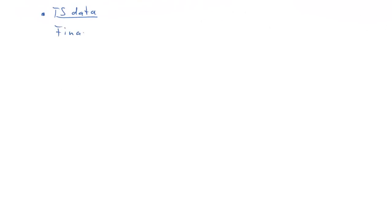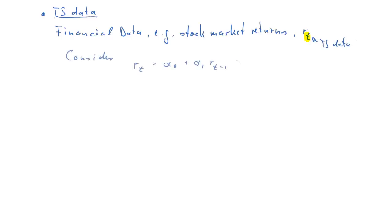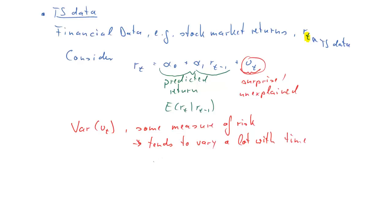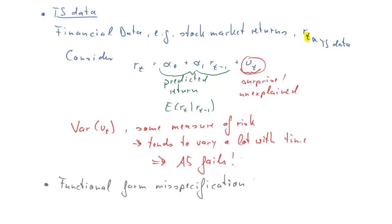When dealing with time-series data, there is also a case where we quite typically observe heteroscedasticity. For instance, looking at stock market returns R_t — now with T subscripts indicating time-series data — consider an AR(1) model. For financial data, the predicted return contains very little variation; most of the variation is in the u's, which are the surprises or unpredicted returns. The variance of that error term is a measure of risk of your investment, and this variance tends to vary through time a lot — also a breach of assumption A5, which assumes constant variance.